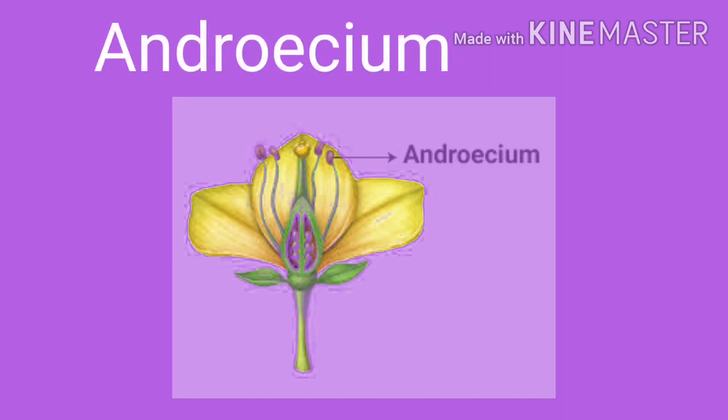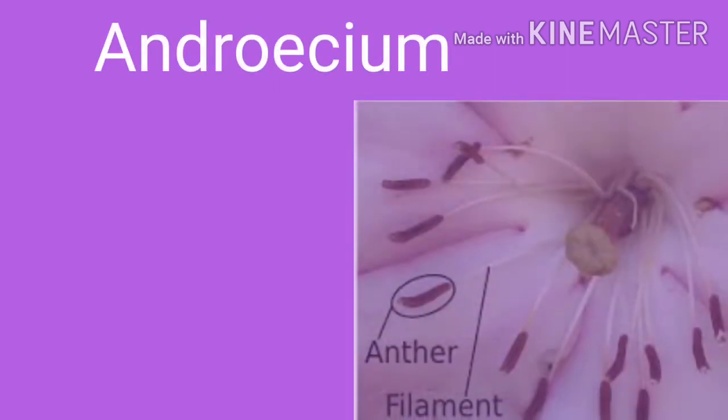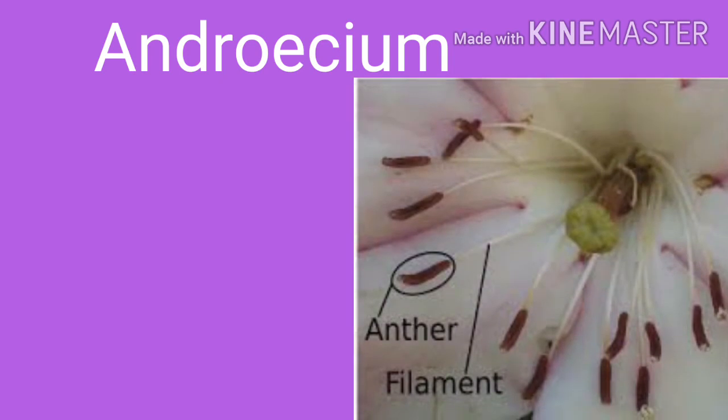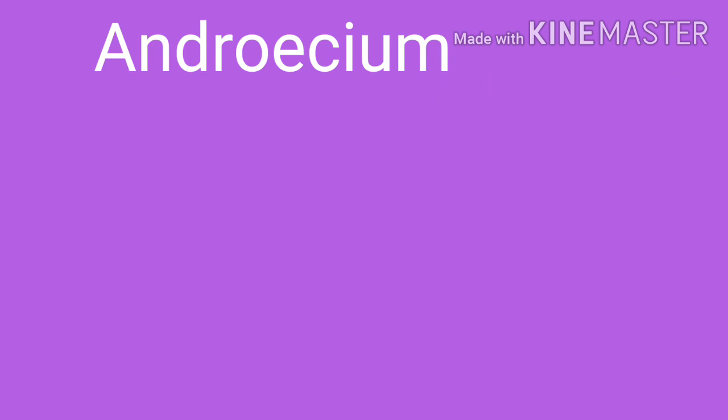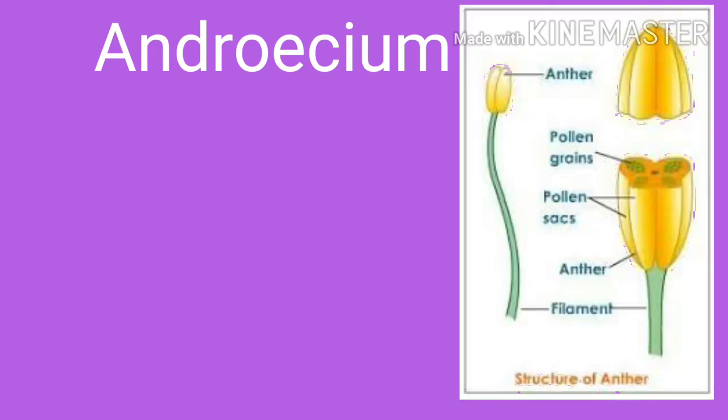Androecium is the male reproductive organ and it consists of stamens. Stamens typically consist of a stalk called the filament, with an upper swollen part called the anther at the tip. In the anther, pollen grains are developed from pollen mother cells.